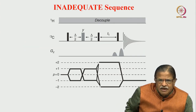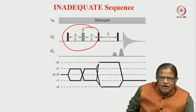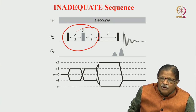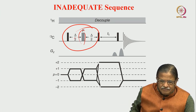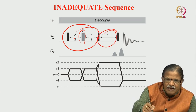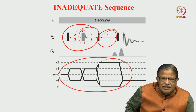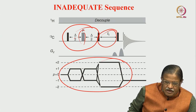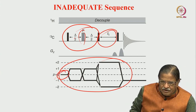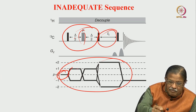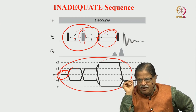This is the INADEQUATE sequence. Looking at the sequence, you can see it is a spin-echo sequence — a 180-degree pulse with a delay on either side — followed by an evolution period T1, then an RF pulse for detection. This involves selection of the coherence transfer pathway. When magnetization is along the Z axis, the pathway is 0. A 90-degree pulse takes it to the plus-1 or minus-1 single quantum pathway.